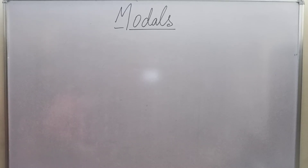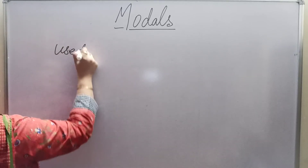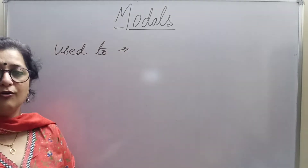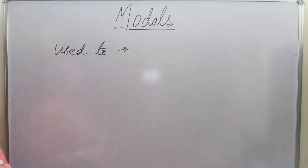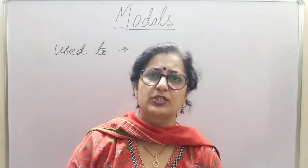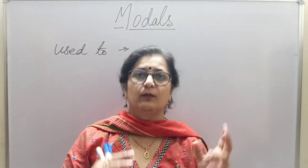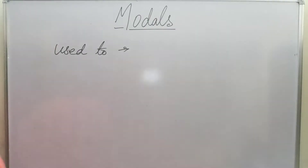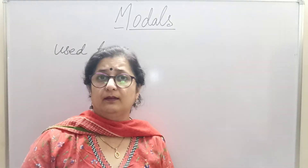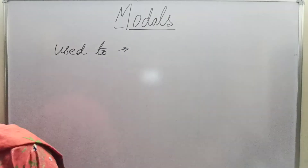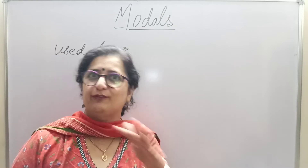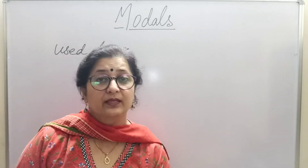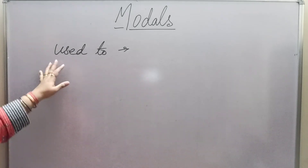Coming up to 'used to,' which is used in the form of a past habit. For example: 'I used to read plenty of books in my childhood' — that's a past habit. Another sentence: 'I used to play here every day' — there was a beautiful garden and I used to play here every day. So 'used to' helps us talk about habits we had in the past.